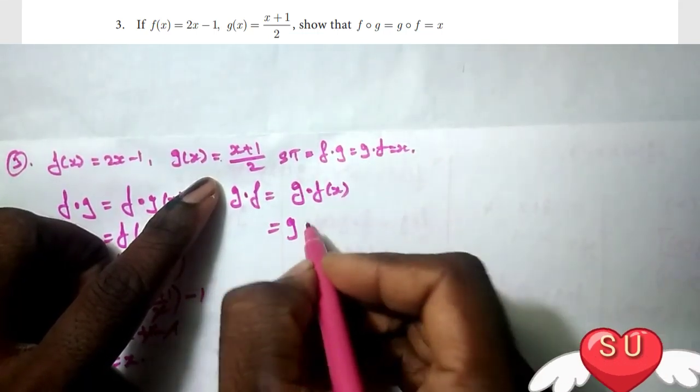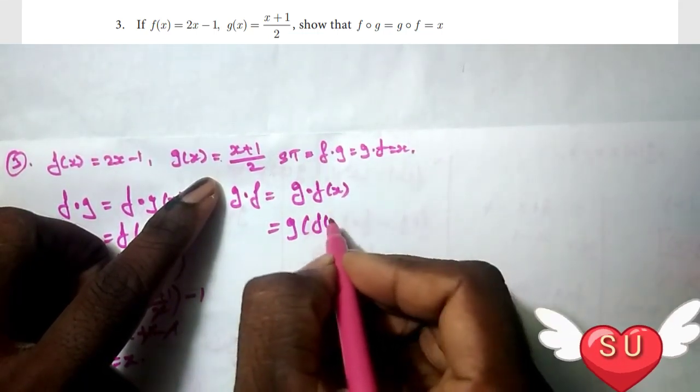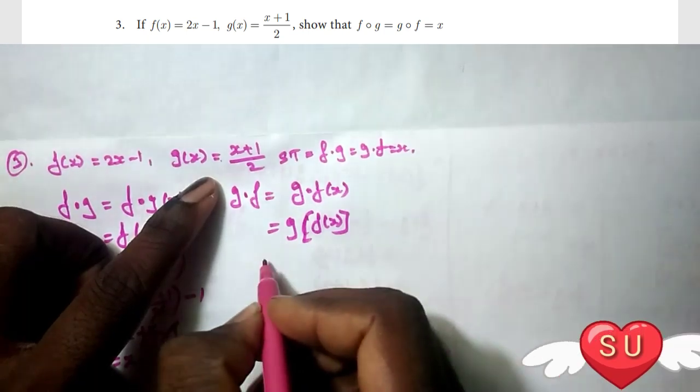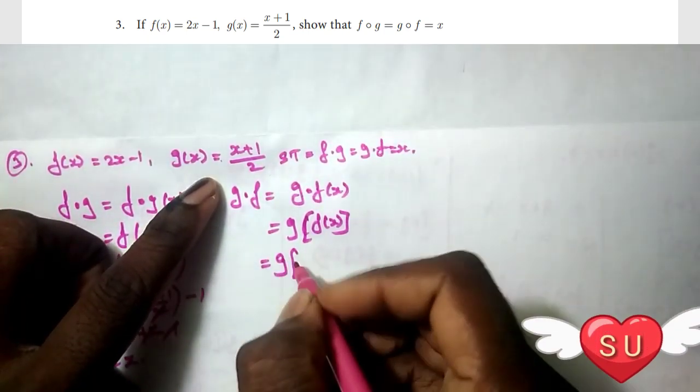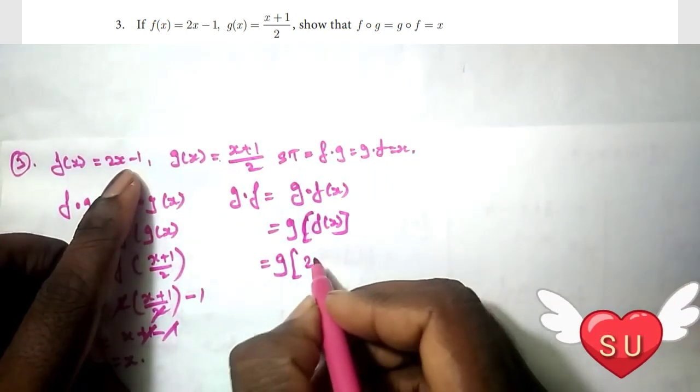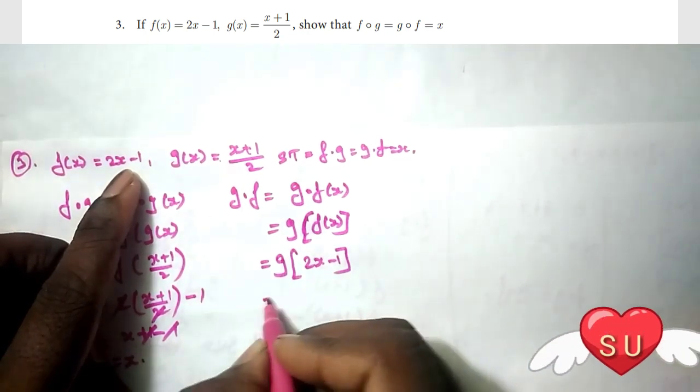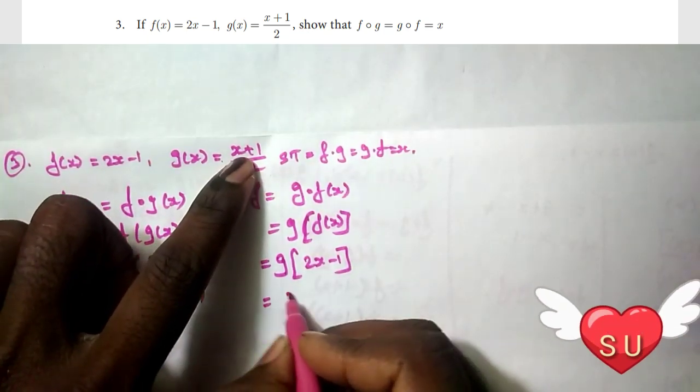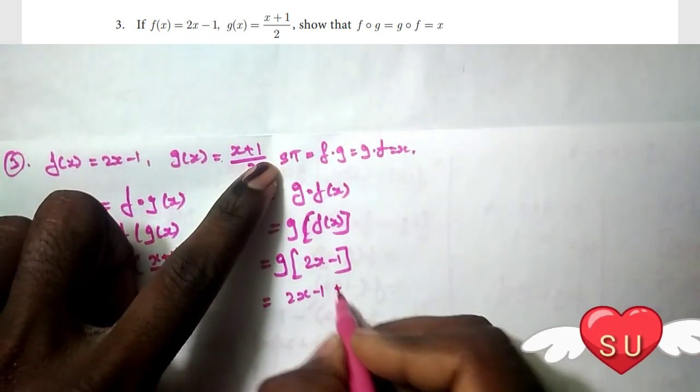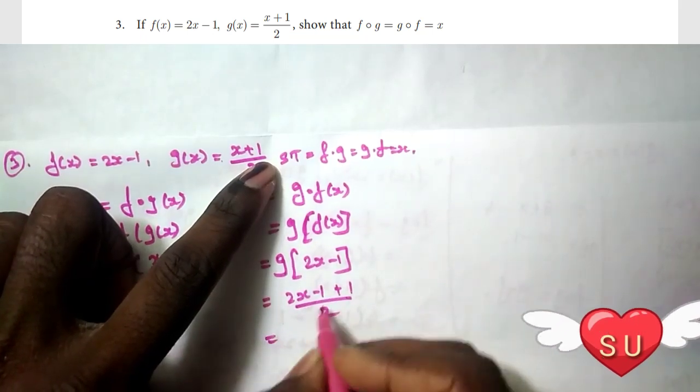Now for g∘f. So g(f(x)), and f(x) = 2x - 1, so g(2x - 1). This equals (2x - 1 + 1)/2.